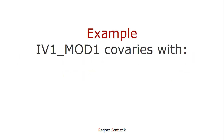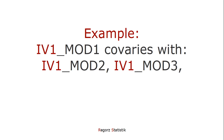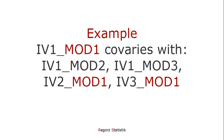Each product term could co-vary with other product terms it shares an indicator with. For example, the double mean centered product term independent variable 1 × moderator 1 co-varies with IV1×M2 and IV1×M3, because those three share the component independent variable 1. It also potentially co-varies with IV2×M1 and IV3×M1, because moderator 1 is the thing all three have in common.